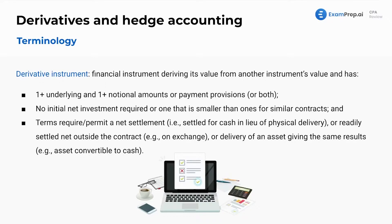Terminology for derivatives and hedge accounting. What is a derivative financial instrument? It is a financial instrument that derives its value from another instrument's value. A derivative can be any sort of swap, future forward, put, or call. Think of a derivative as a piece of paper — it doesn't have value unless something else gives it value.